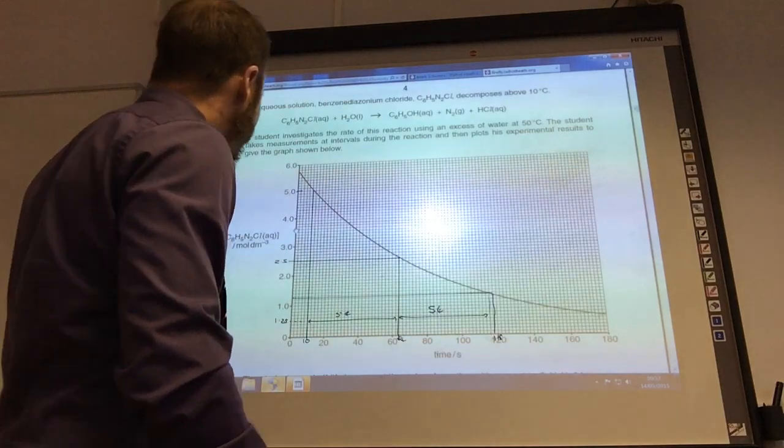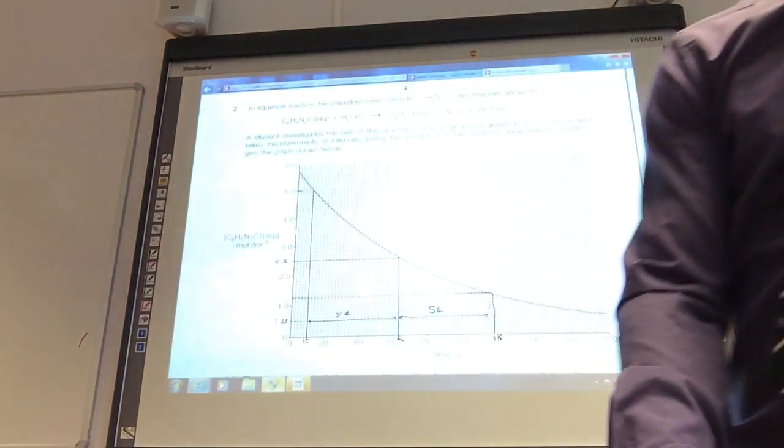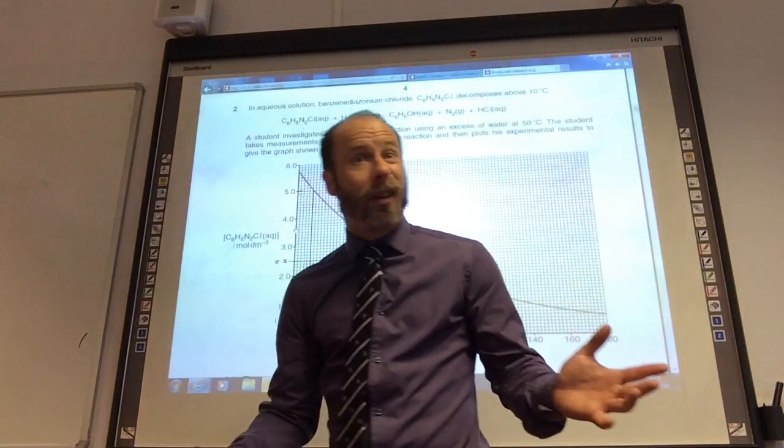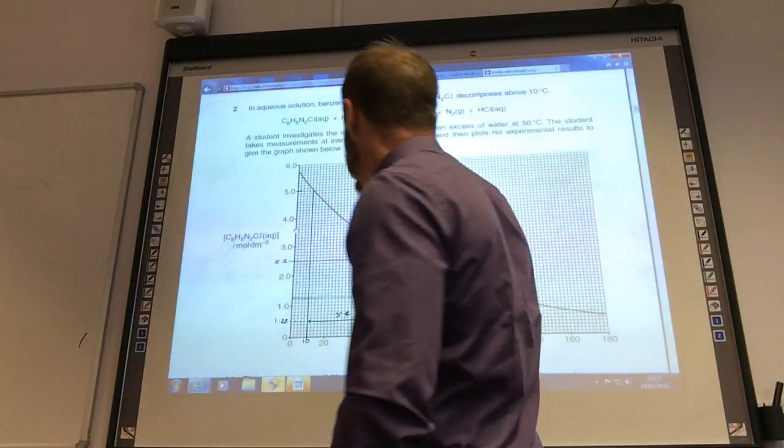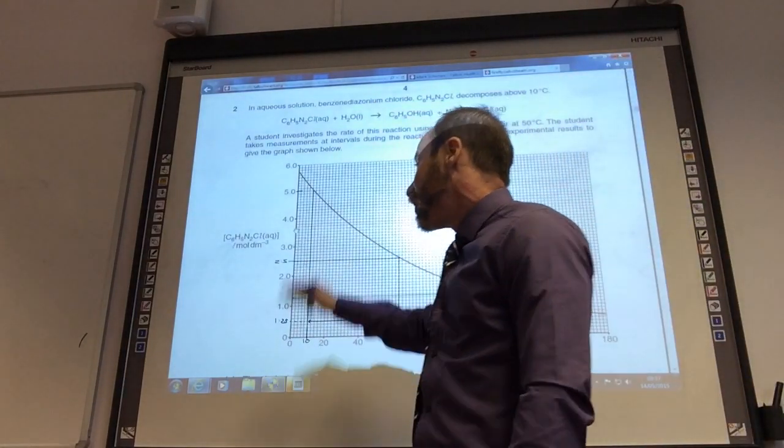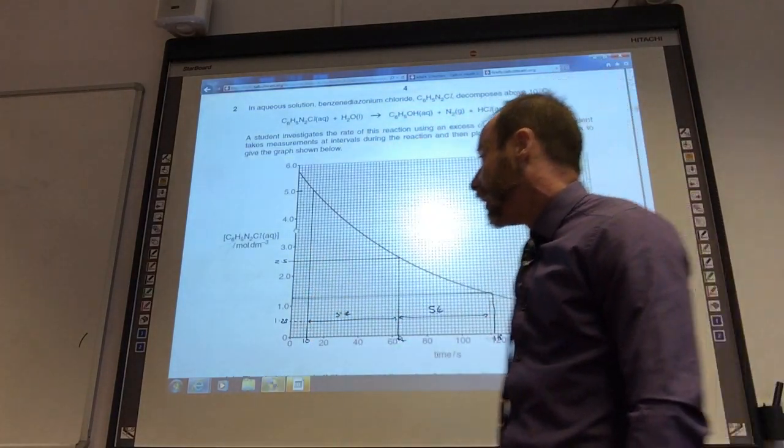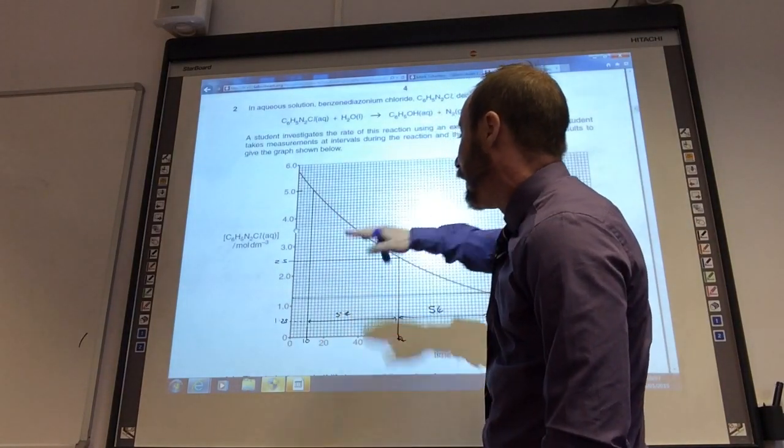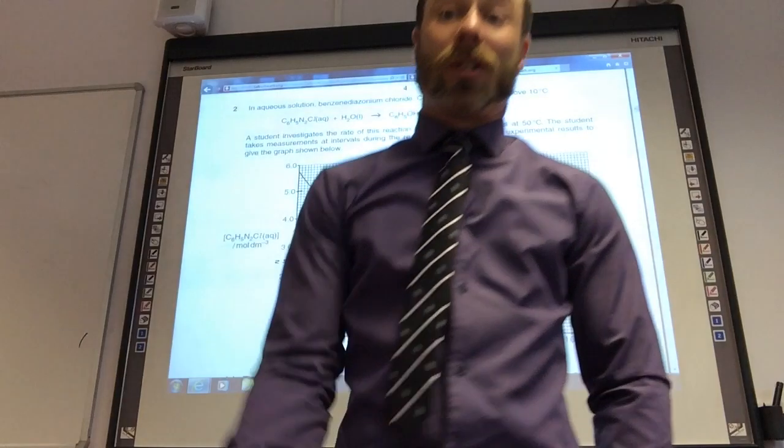What will be the effect of doubling the concentration on the half-life? Nothing at all. The half-life is going to be the same. Because as I change concentration, it doesn't matter because the half-life is always the same. The time taken for the concentration of a reactant to change by half is always the same. Constant half-life.